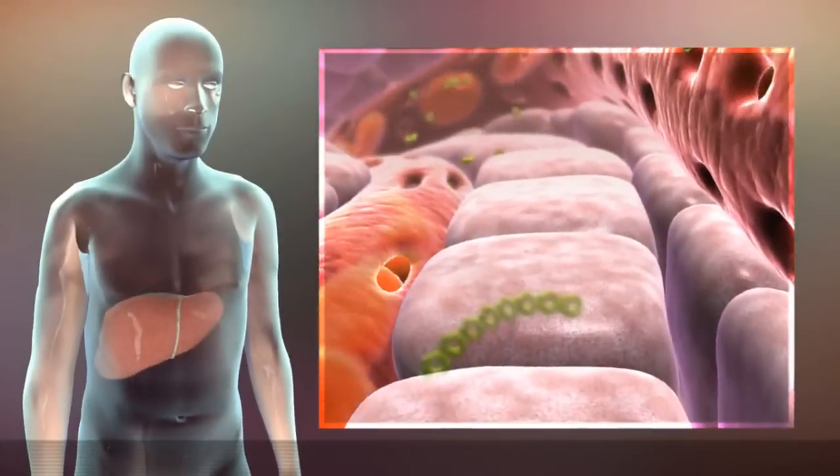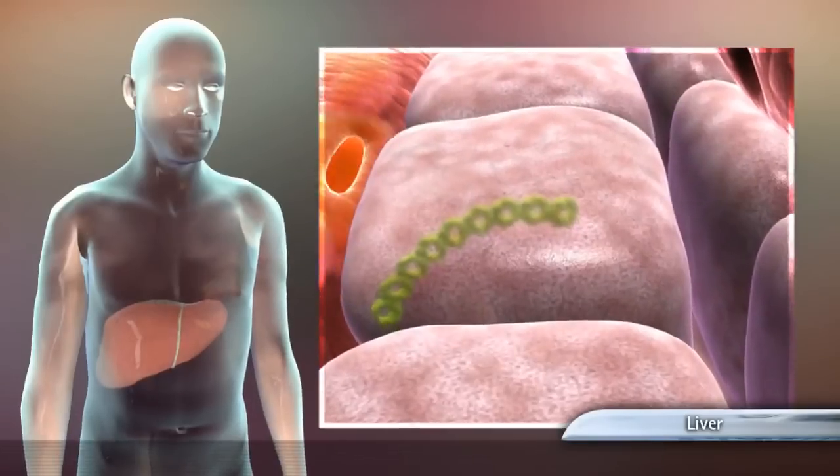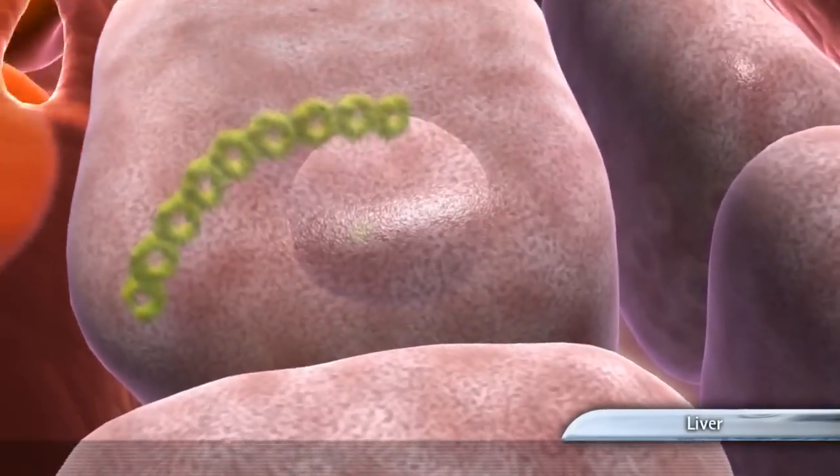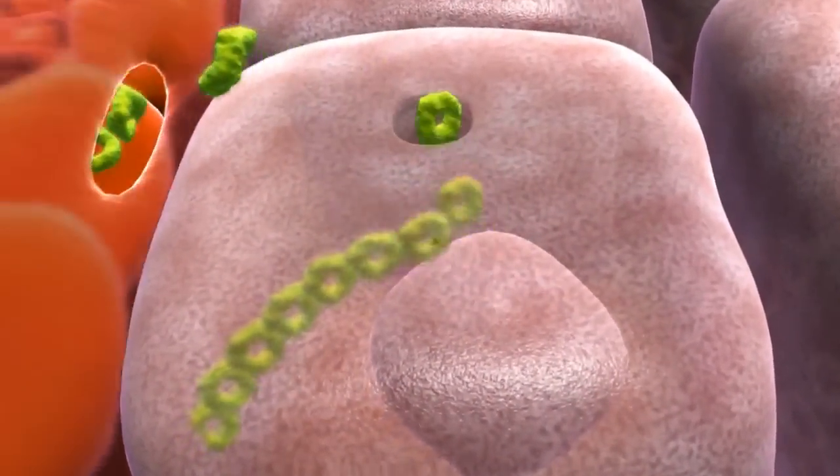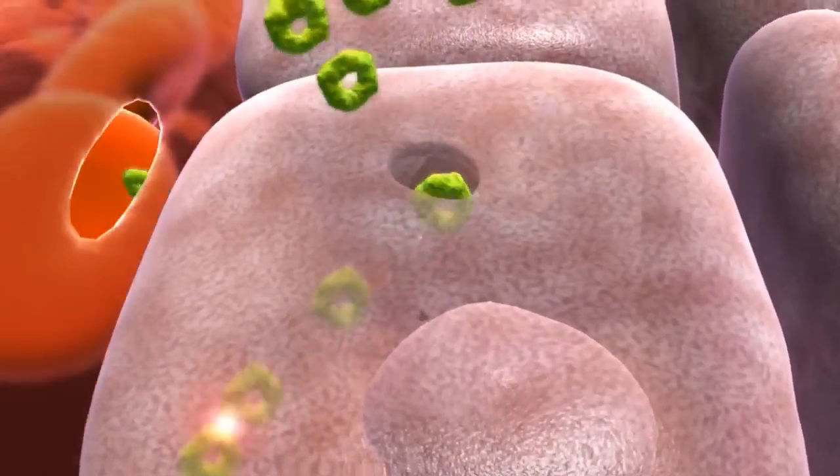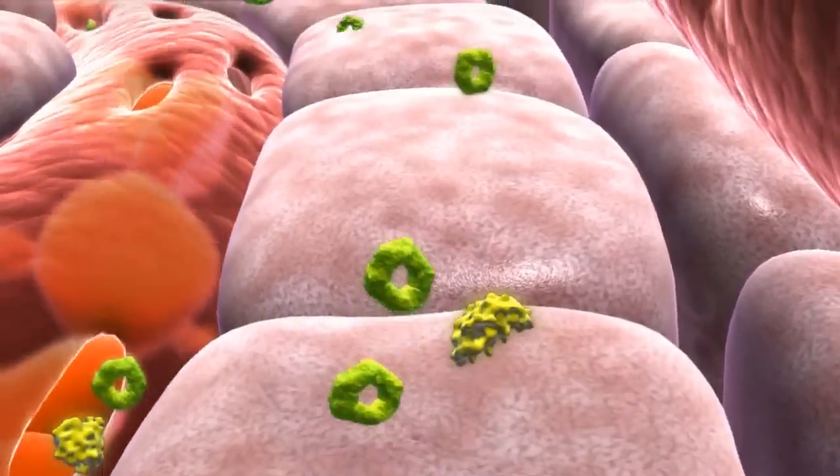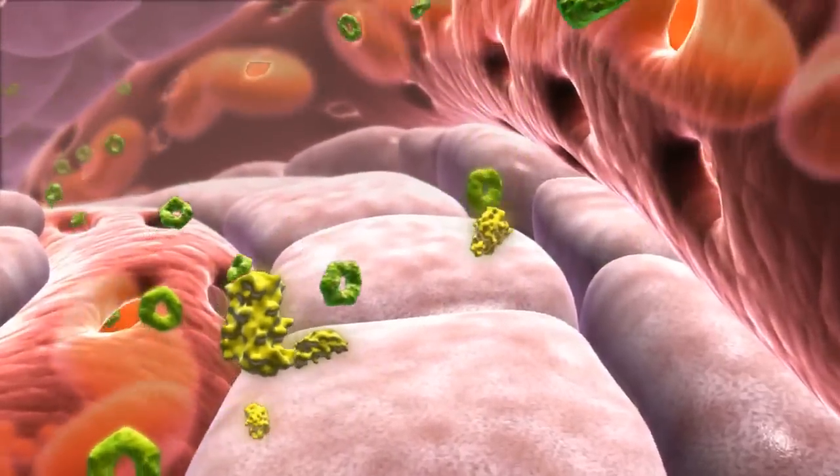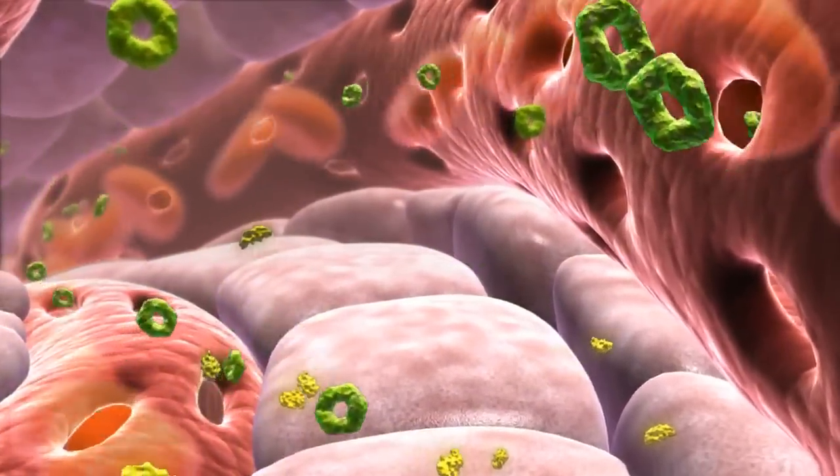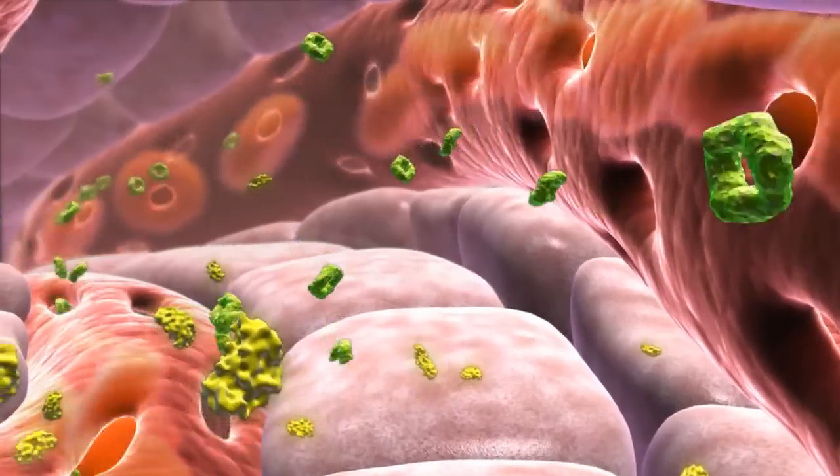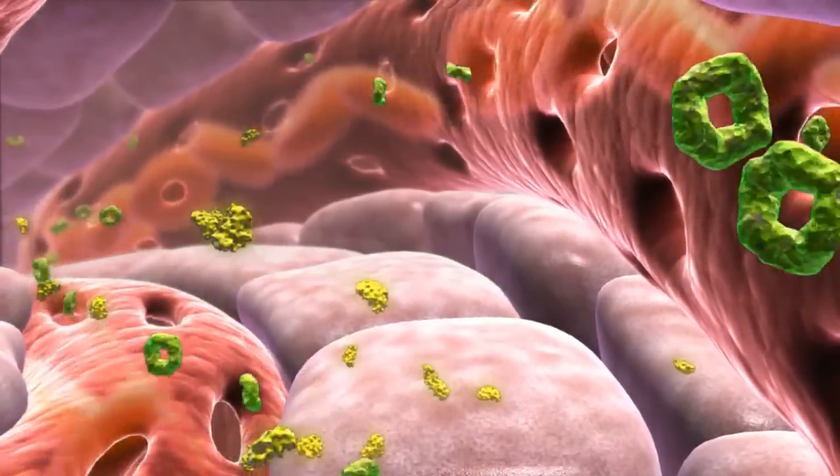In the fasting state, the liver helps maintain normal blood glucose levels by hepatic gluconeogenesis and glycogenolysis, which result in the release of glucose into the blood. Insulin also suppresses hepatic gluconeogenesis while increasing peripheral glucose uptake, which prevents an abnormal rise in postprandial blood glucose levels.